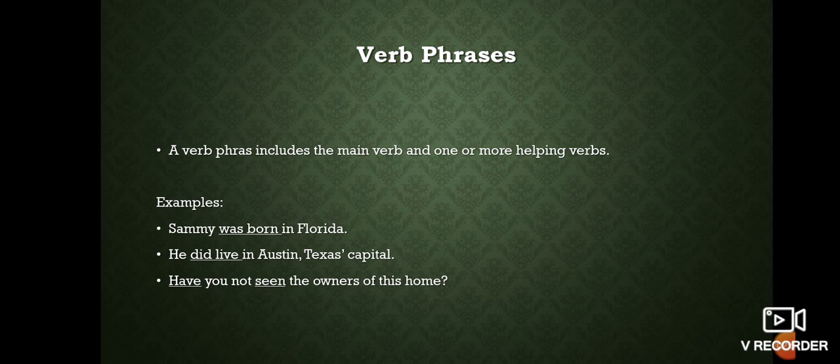Then here comes verb phrase. A verb phrase includes the main verb and one or more helping verbs. As the name mentions, in a verb phrase the principal or main word is the main verb, and along with it there can be a helping verb accompanying it.